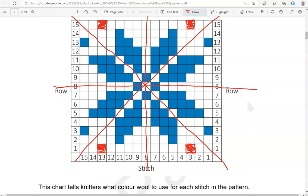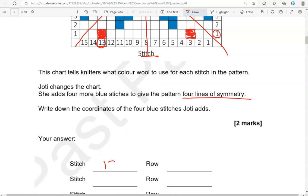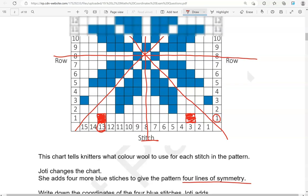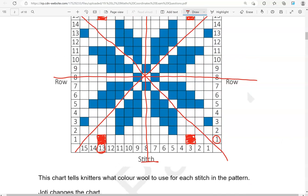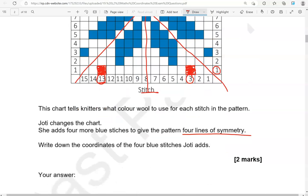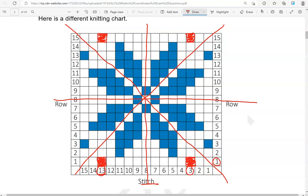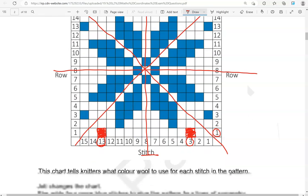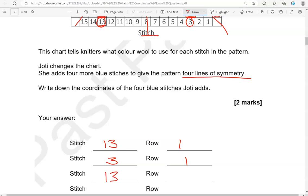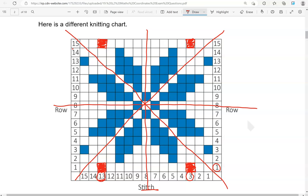What are the coordinates of these? Let's start with this one. This one has coordinates stitch 13 and row 1. Then we have this one, stitch 3, row 1. This one has coordinates stitch 13, row 15. And the last one has stitch 3, row 15.